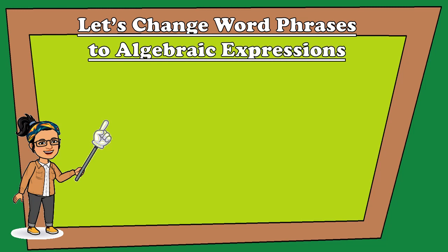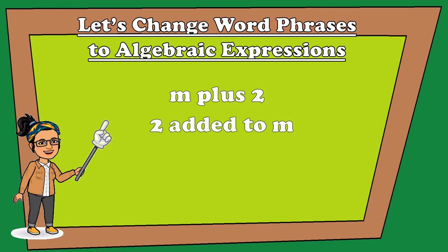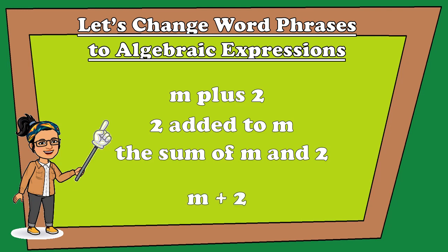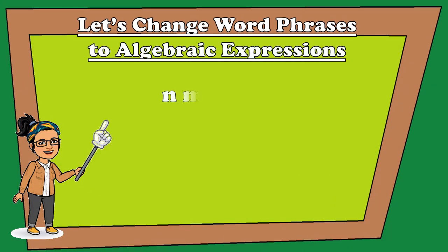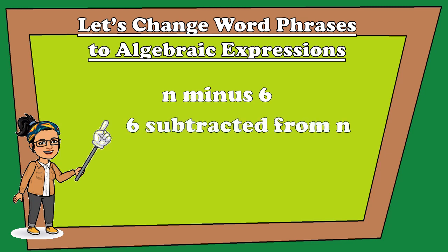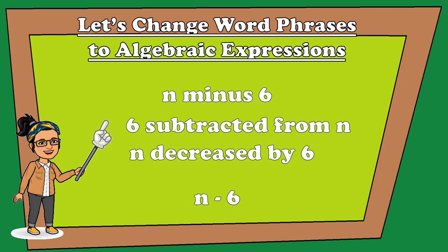Let's change word phrases to algebraic expressions. '2 added to M' or 'the sum of M and 2' gives us M plus 2. '6 subtracted from N' or 'N decreased by 6' gives us N minus 6.